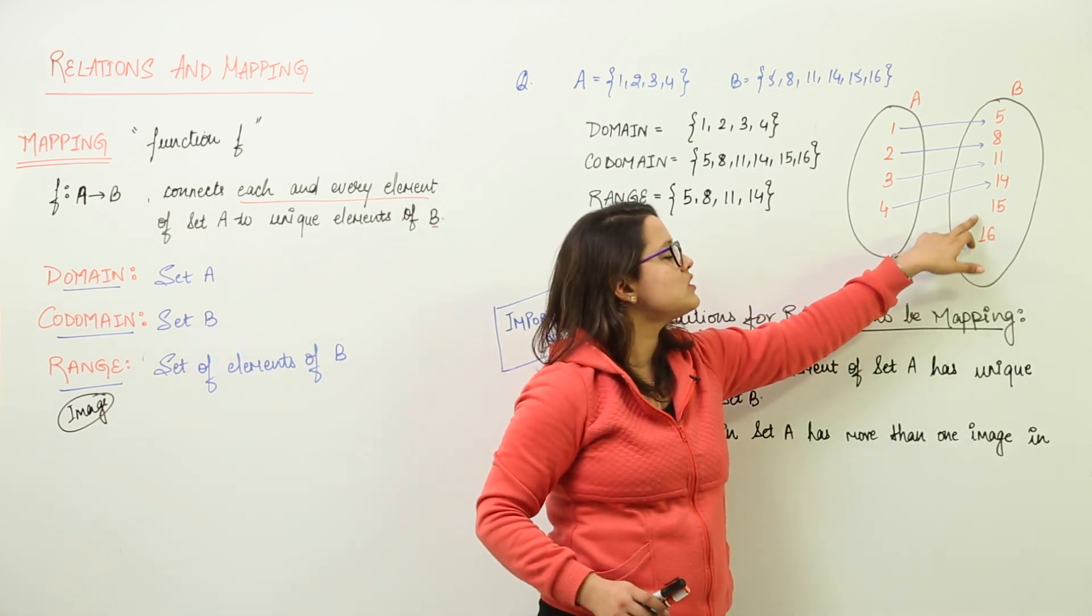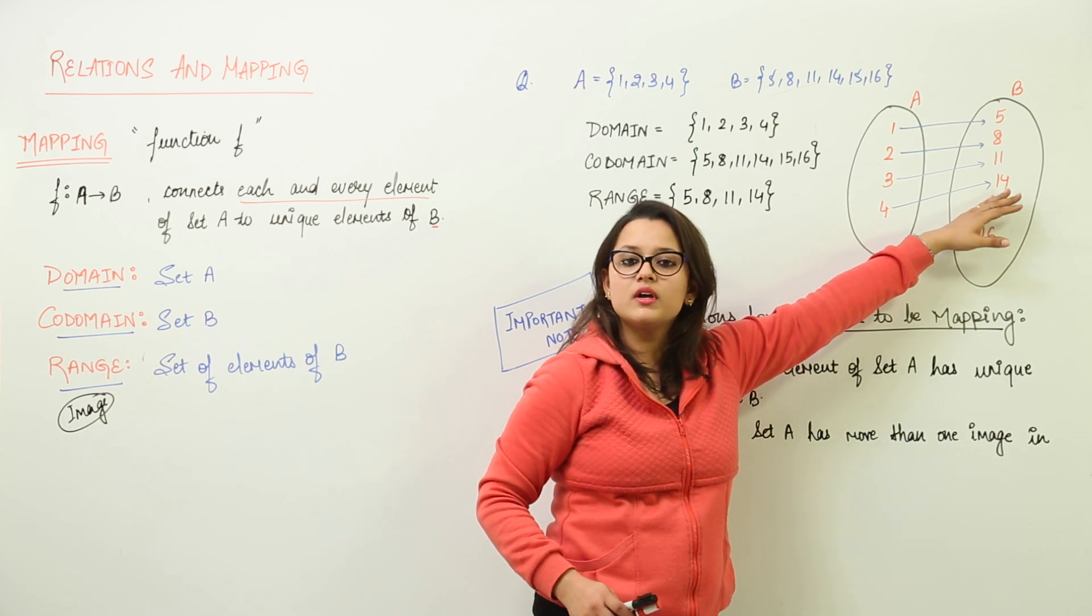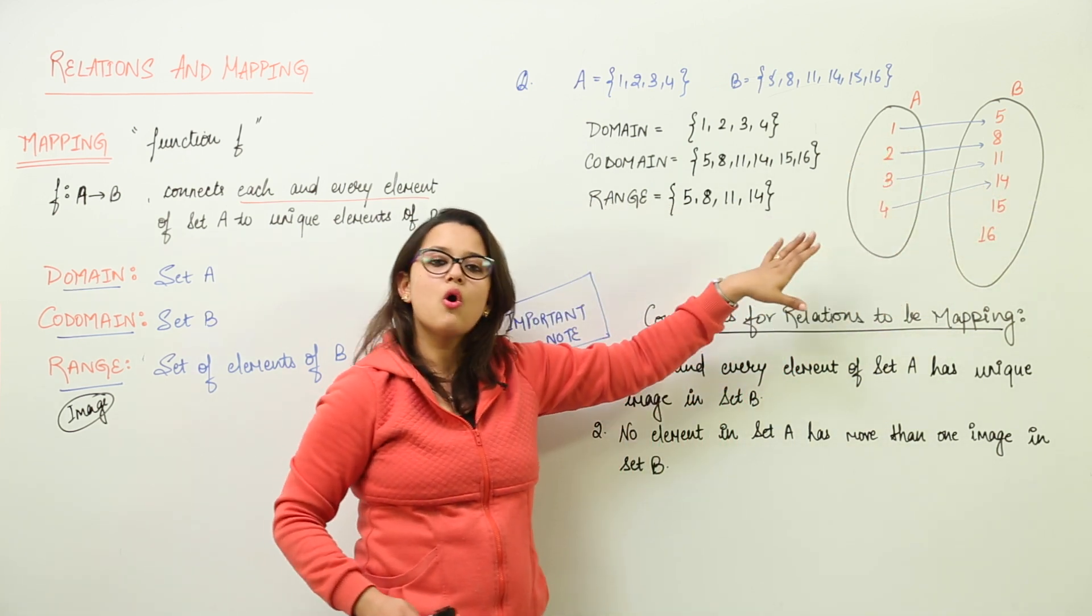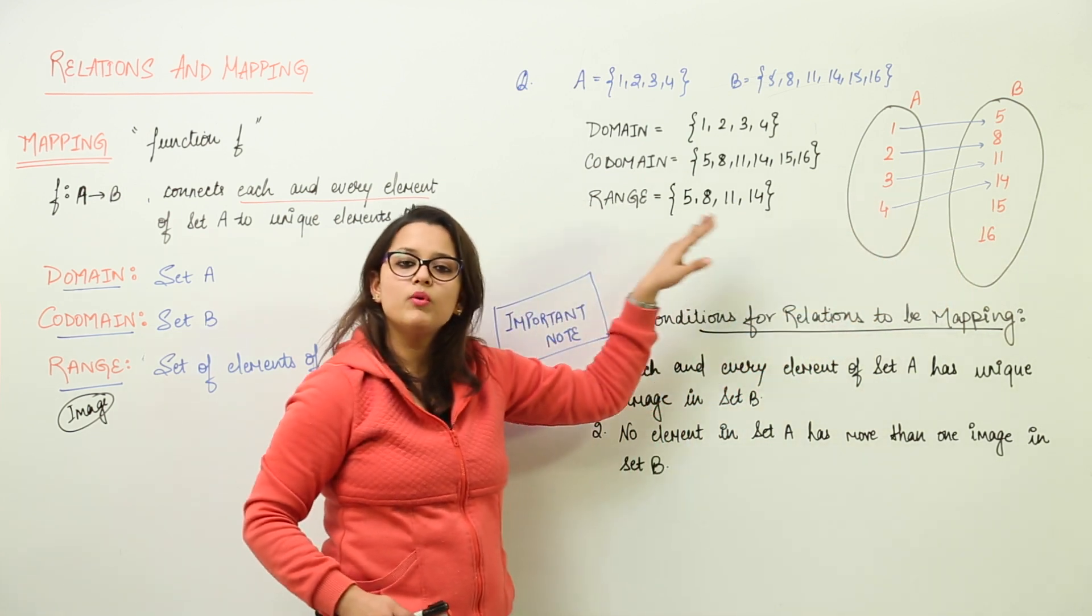There are some values still left which are not connected. So, these will not be considered when you are writing the range. Whereas, if you are writing the co-domain, all the set of values or all the elements that are present in set B will be considered.